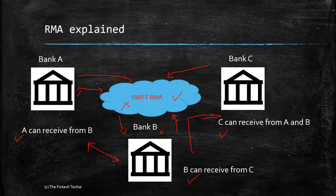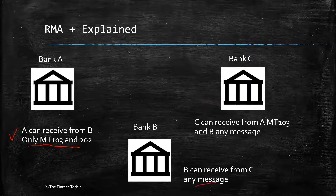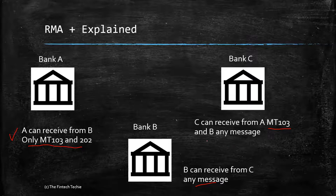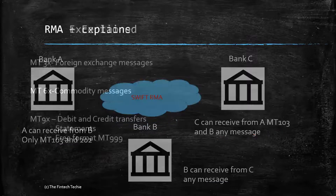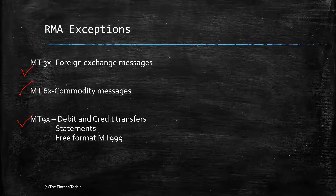So if that is RMA, what is RMA+? RMA+ is slightly more granular — the rules are much more fine-tuned. For example, A can receive from B, but only MT 103 and MT 202. Whereas B says it can receive from C any message. C says it can receive from A only MT 103, not even MT 202, and from B any message. So RMA+ is much more granular. Does it apply for all messages? No — there are exceptions like the three series for FX, six series for commodity, nine series for debit/credit transfers and statements, and free format MT 999. These are the messages to which RMA cannot be applied.